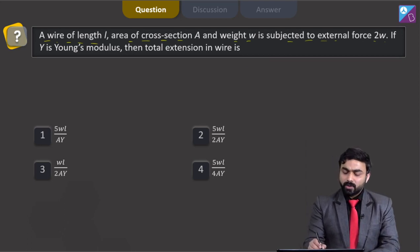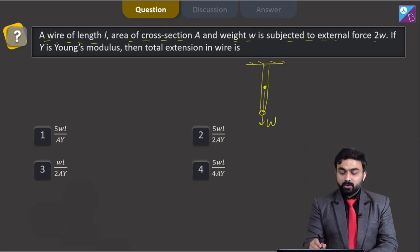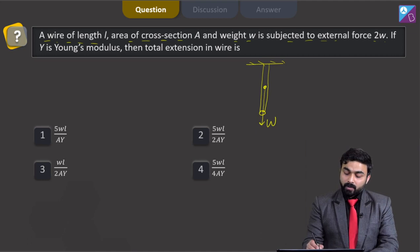I need to calculate the total extension. So there was a wire here. Let's suppose this was my wire. And at the center of mass, W was acting because W is the weight of the wire. And now, this particular wire was subjected to an external force 2W.